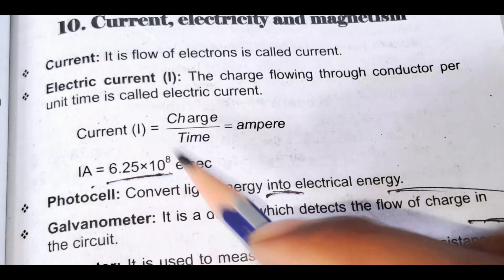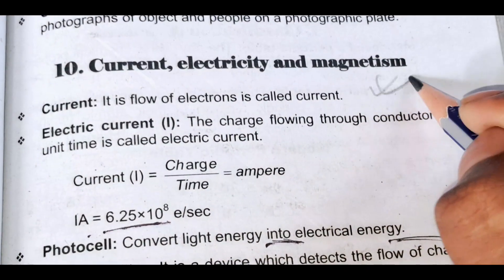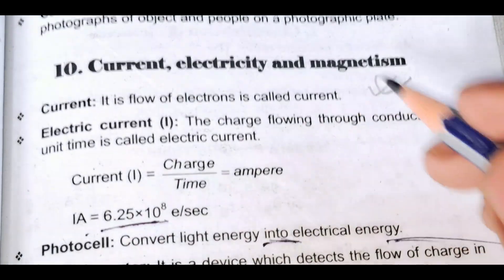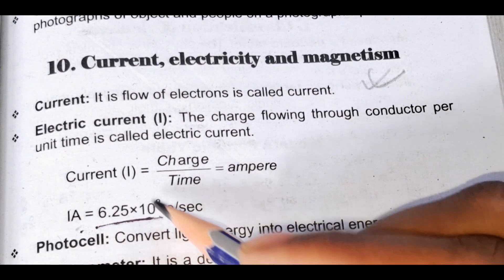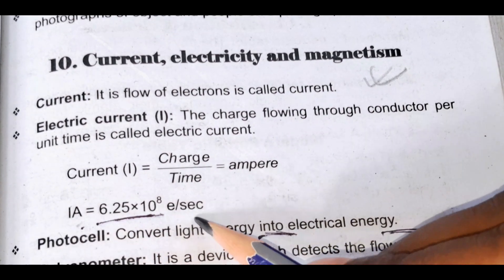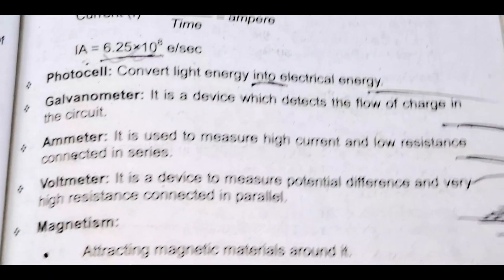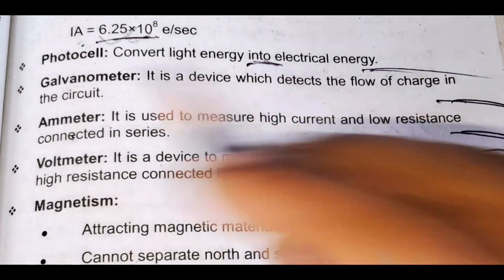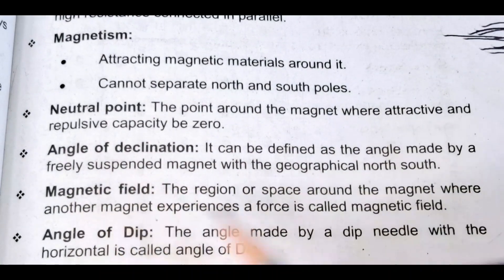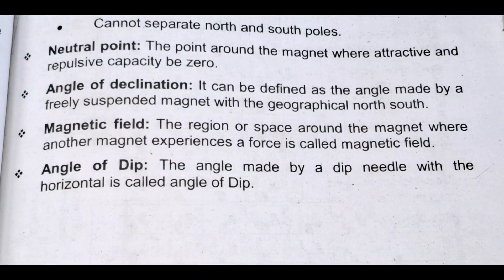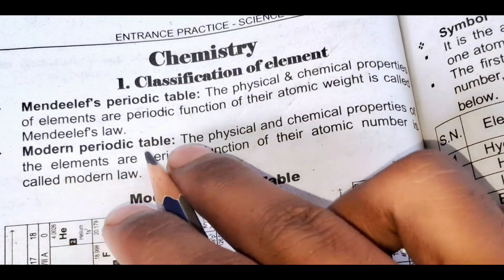The flow of electrons is called electric current. The concept of current electricity — one coulomb is 6.24 × 10¹⁸ electrons per second. Important instruments: photo cell, galvanometer, ammeter, voltmeter. Magnetism: neutral point, angle of declination, magnetic field, angle of dip.